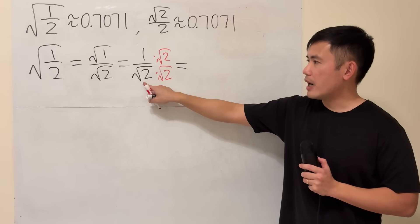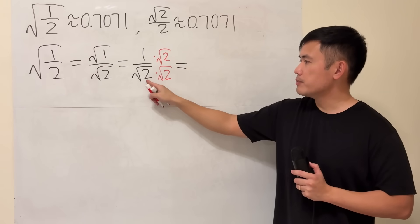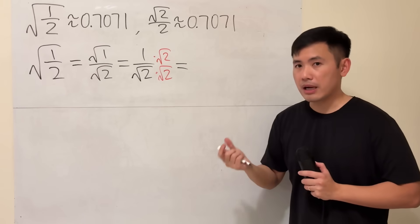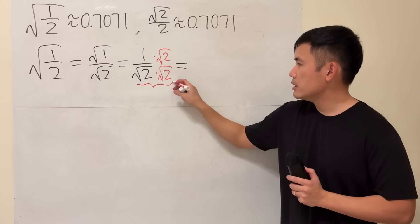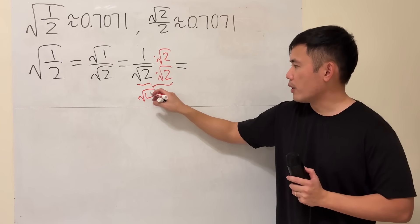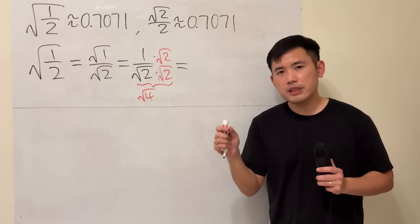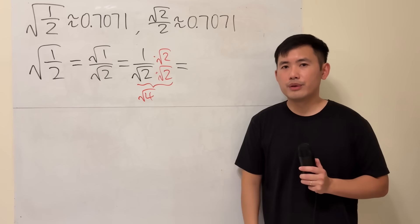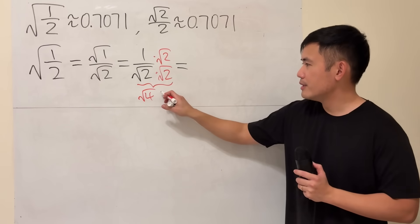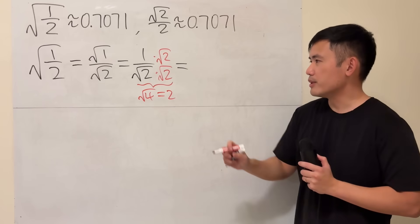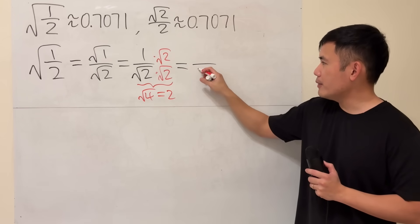We now have square root of 2 times square root of 2. What we can do is, because both things inside are positive, we can multiply inside. So this equals square root of 4. Can we think of two numbers that multiply to be 4? Yes, the answer is just 2. So the bottom is just a regular 2 now.